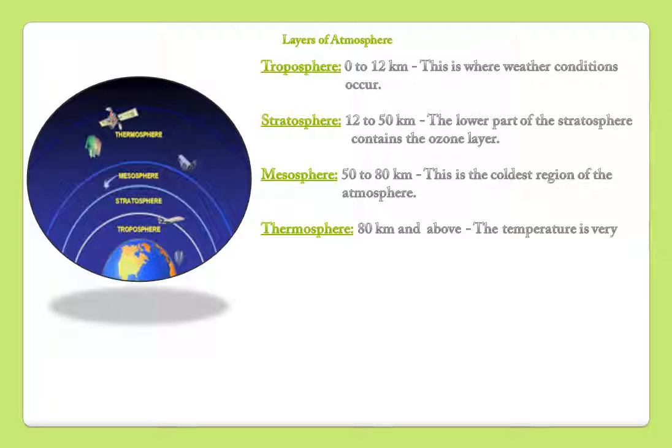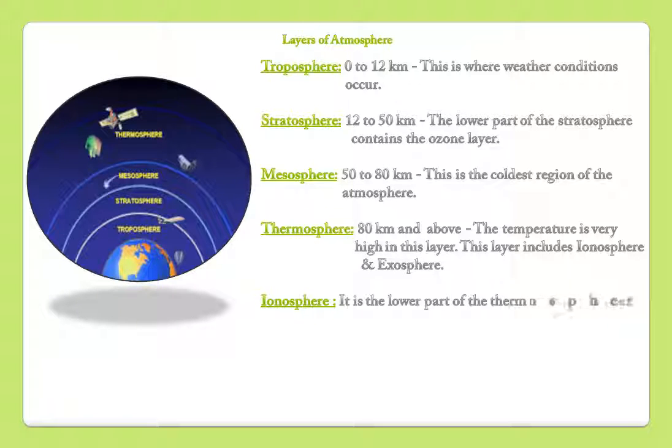Thermosphere: 80 kilometers and above. The temperature is very high in this layer. This layer includes ionosphere and exosphere.